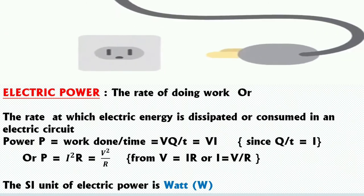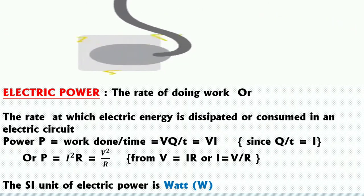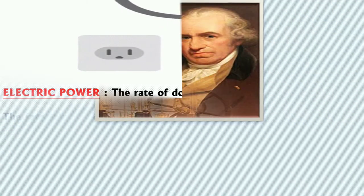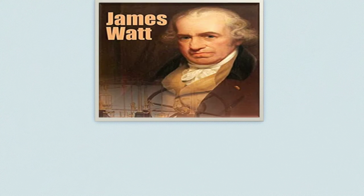The SI unit of electric power is Watt. The SI unit of electric power is named after Scottish inventor and mechanical engineer of the 18th century who improved the steam engine and drove the industrial revolution, James Watt.